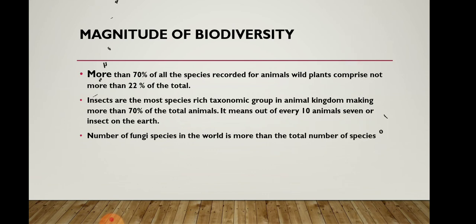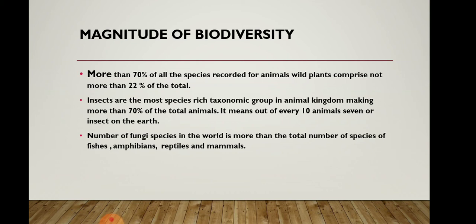The number of fungi species in the world is more than the total combined number of species of amphibians, reptiles, and mammals. So if you keep amphibians, reptiles, and mammals together on one side, the number of fungi species on Earth's surface exceeds them. However, biologists are still not sure about the diversity of prokaryotic species like protists, archaea, and bacteria.